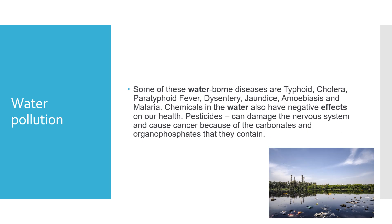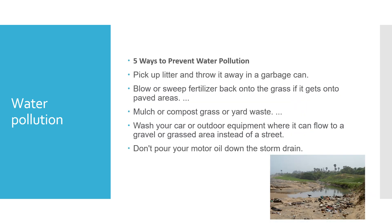Some waterborne diseases are typhoid, cholera, paratyphoid fever, dysentery, jaundice, amoebiasis and malaria. Chemicals in the water also have negative effects on our health. Pesticides can damage the nervous system and cause cancer because of the carbonates and organophosphates that they contain. The 5 ways to prevent water pollution are: pick up litter and throw it in a garbage can; blow or sweep fertilizer back onto the grass if it gets onto paved areas; mulch or compost grass or yard waste; wash your car where water flows to gravel or grassed areas; and do not pour motor oil down the storm drain.